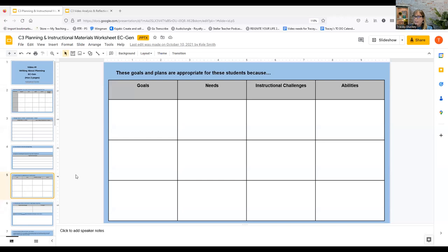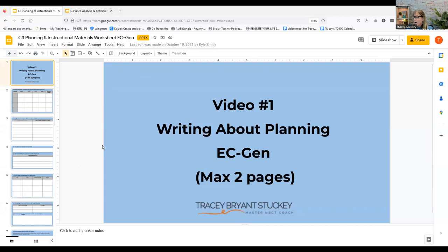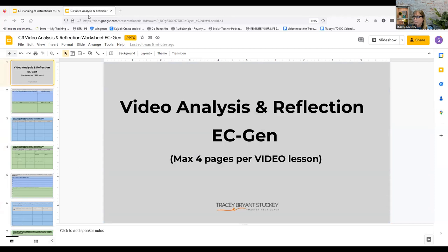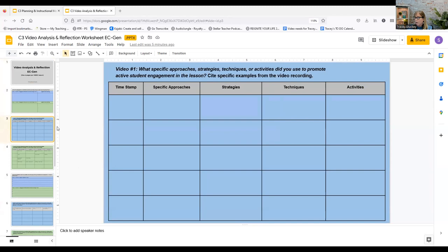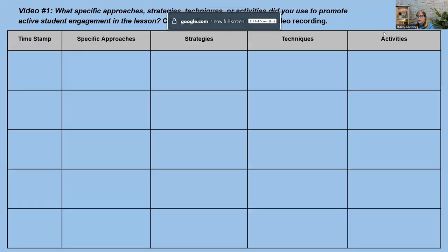Let me share my screen and show you. I wanted to give you a preface on where these documents came from. This is ECGEN — and this is writing about planning. Okay, we're not in the writing about planning, we are in the analysis and reflection section. Let me go down to that. This is that question right here. Let's make it into a slideshow. This page in this workbook is dealing with video one.